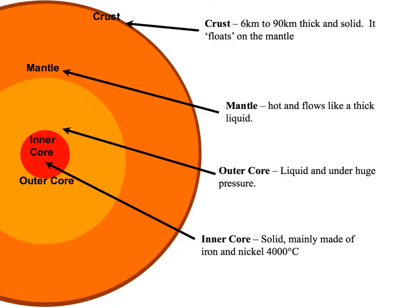If we zoom in a bit further and take a closer look at each of the layers, we will start with the inner core. The inner core is extremely hot — it's at 4000 degrees C. It's made of iron and nickel, and it is solid.